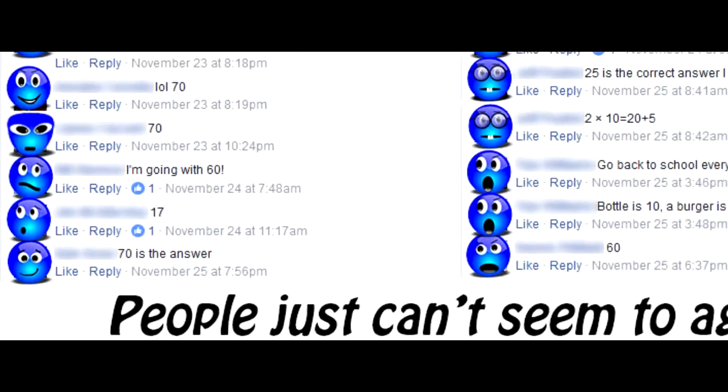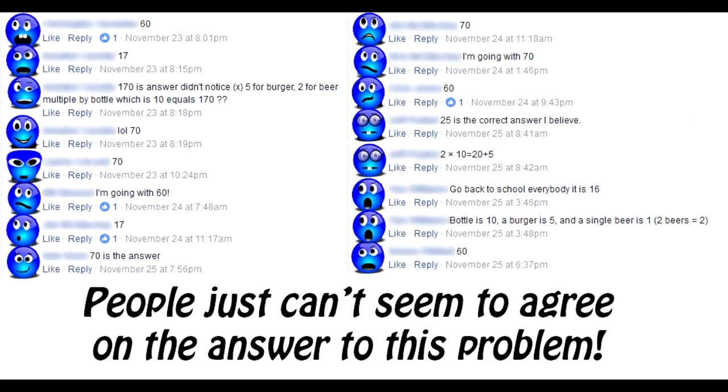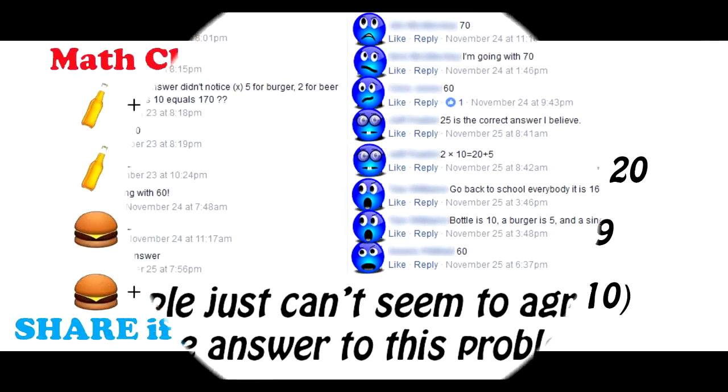The people who got sixty did catch the missing mug, but didn't use the order of operations. If you got seventeen, then you probably didn't notice the missing mug, or the multiplication sign. If you got twenty-five, you probably remembered the order of operations, but didn't catch the missing mug.